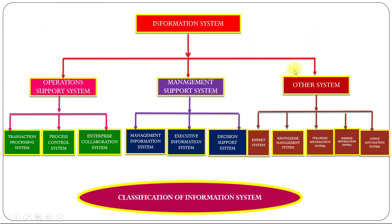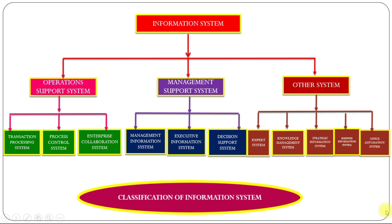This is the classification of information system. Information system is divided into operation support system, management support system, and other system. Operation support system is divided into transaction processing system, process control system, and enterprise collaboration system. Management support system is divided into management information system, executive information system, and decision support system. Other system is divided into expert system, knowledge management system, strategic information system, business information system, and office automation system.